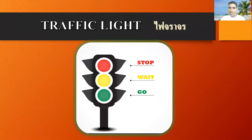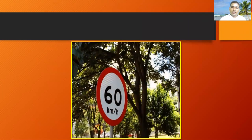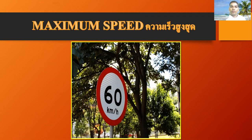Next, what sign is this? It has the number 60 written on it, and 'km/h' means 60 kilometers per hour. This sign is showing about speed. This sign's name is maximum speed — 60 kilometers per hour.